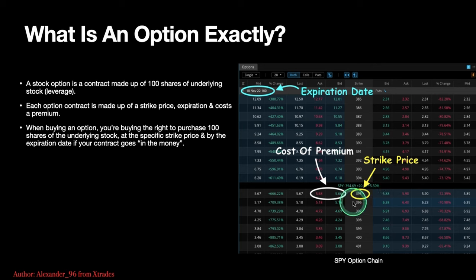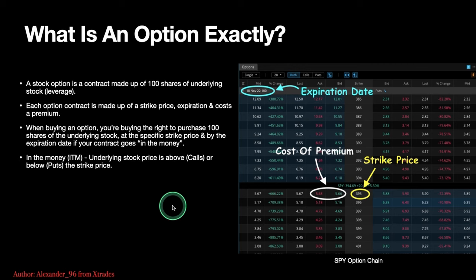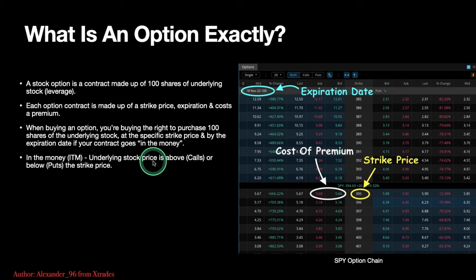Let's give an example. If you bought a $395 call on SPY and it ran all the way to $400 by November 18th, your contract would be in the money, and you could then purchase 100 shares at $395 a share. When a contract goes in the money, that means the underlying stock price is above or below the strike price — above for calls, below for puts.